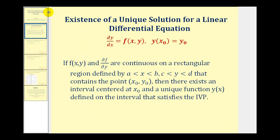We just finished discussing that if we have a first-order differential equation in this form with this initial condition, if the function f and the partial derivative of f with respect to y are both continuous on a rectangular region defined here that contains the point (x₀, y₀) from the initial condition, then there exists an interval centered at x₀ and a unique function y(x) defined on the interval that satisfies the initial value problem.